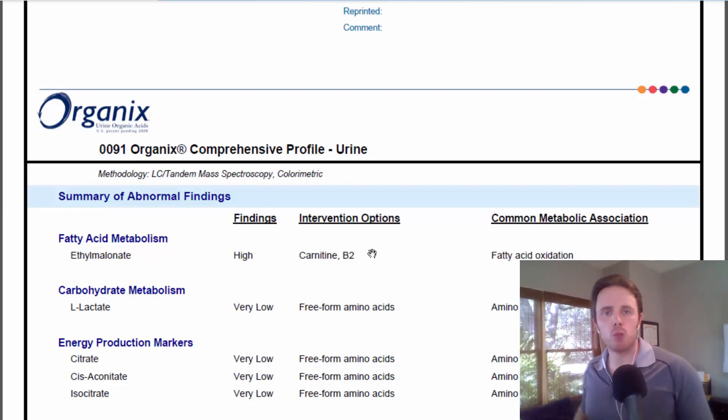Number two is going to be malabsorption. There could be low stomach acid or enzymes. You could have infections in there, whether it's SIBO or bacteria or parasitic infections. It could even be food allergies as well, gluten sensitivity followed by leaky gut.